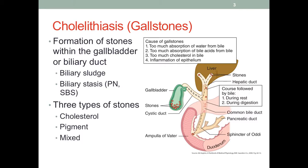A common disease is gallstones in the gallbladder — actually, they can be anywhere in the biliary duct system, as we can see here. The liver synthesizes bile and sends it to the gallbladder for temporary storage. So the gallstone could originate from inside the liver and travel along the duct, as depicted in the picture, and get stuck anywhere in these structures.